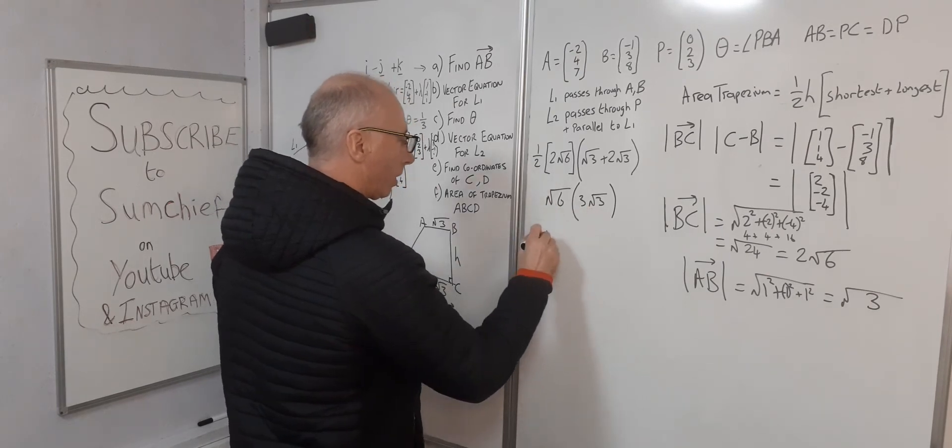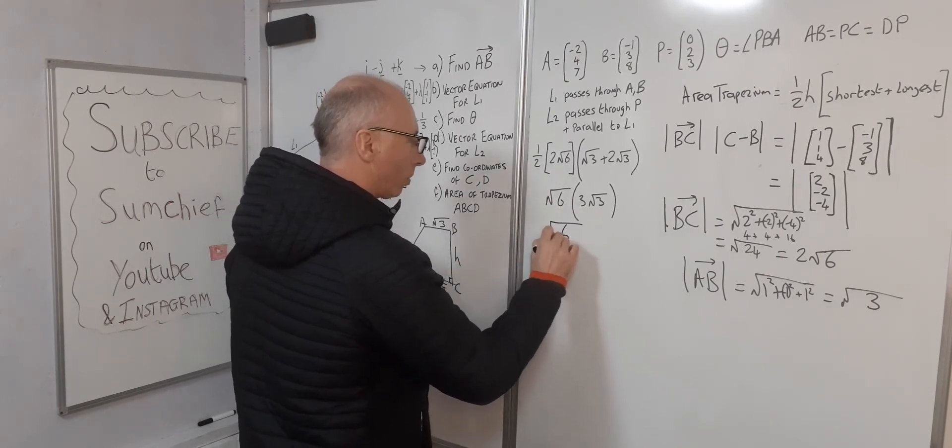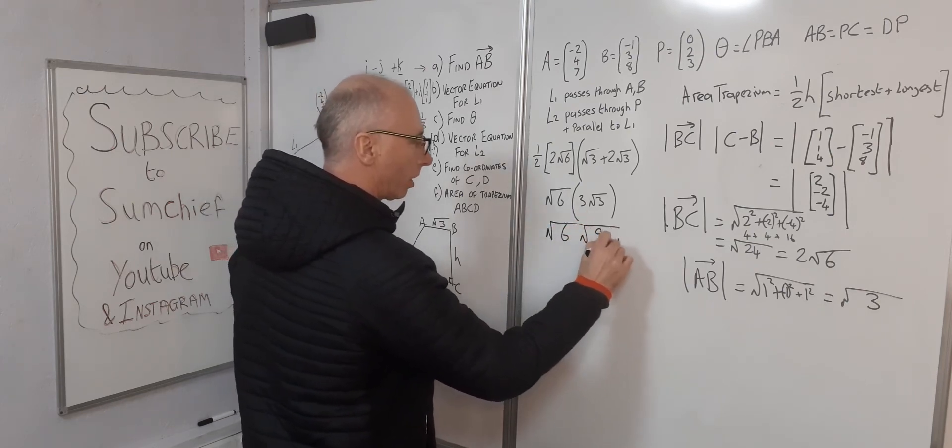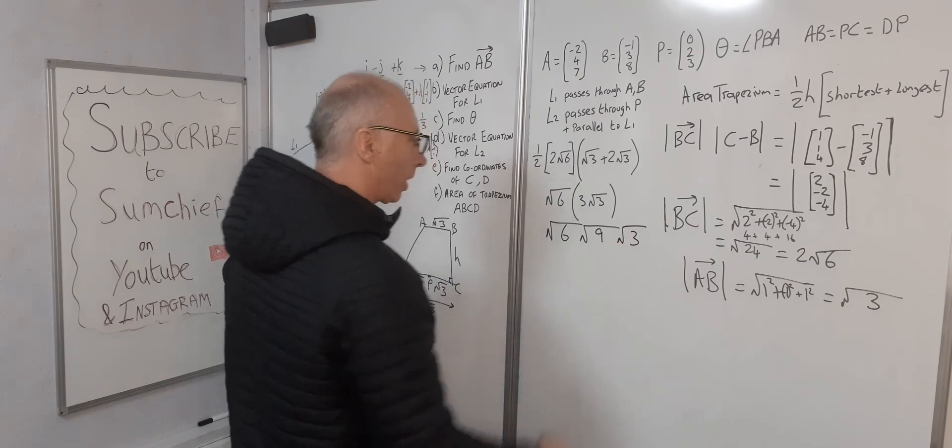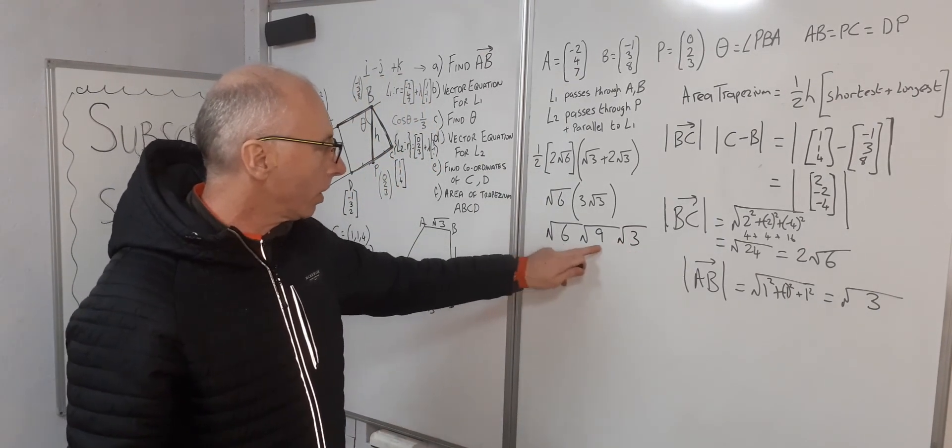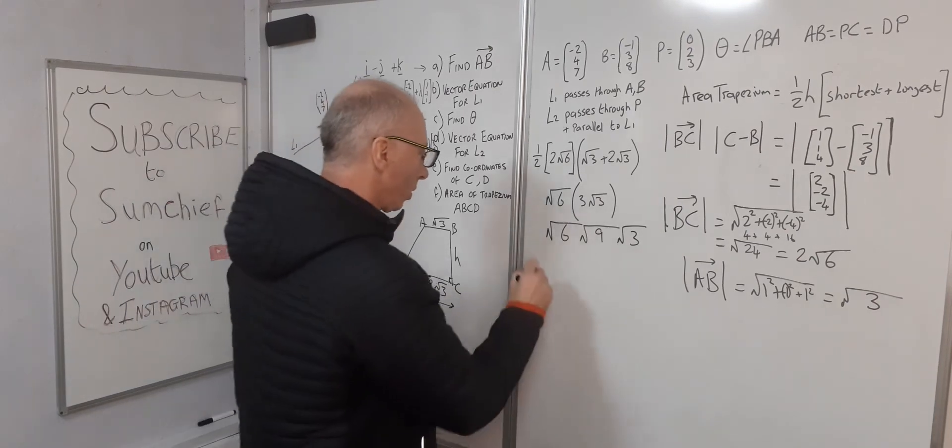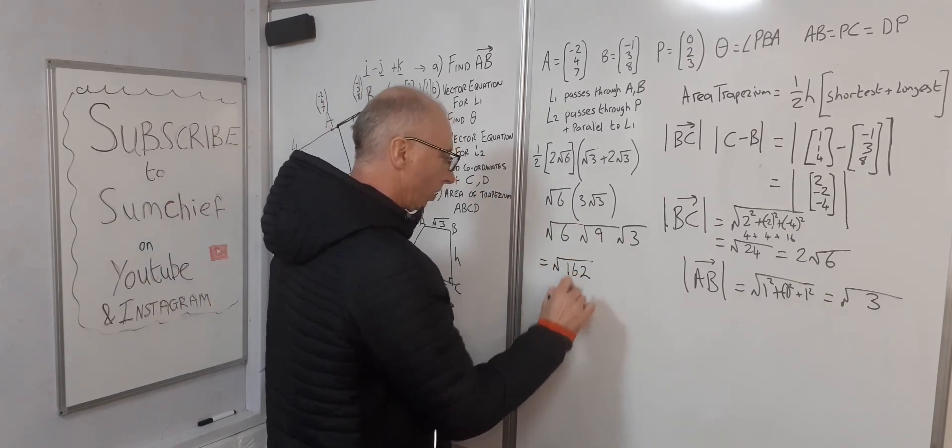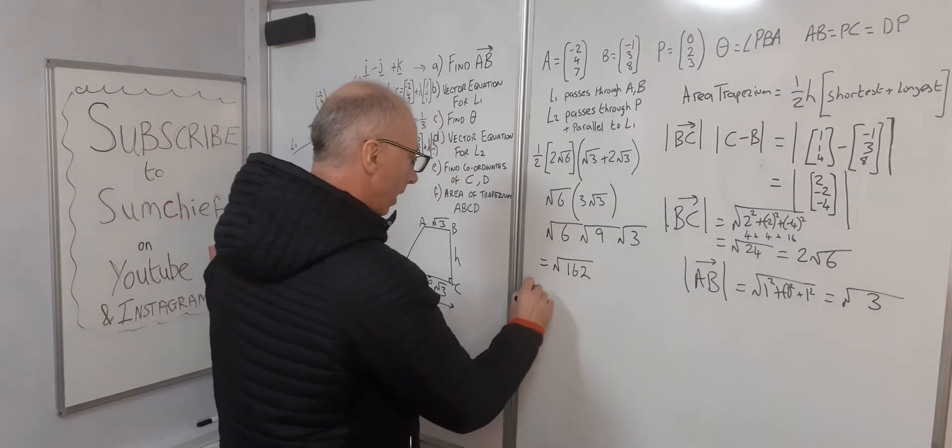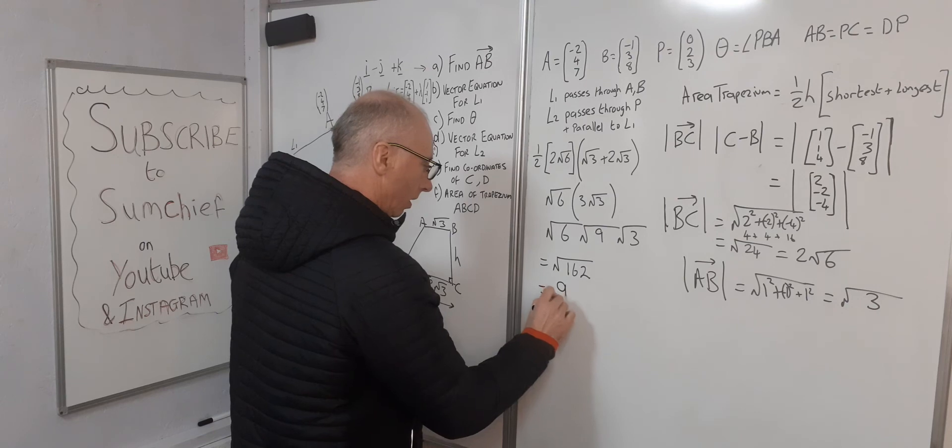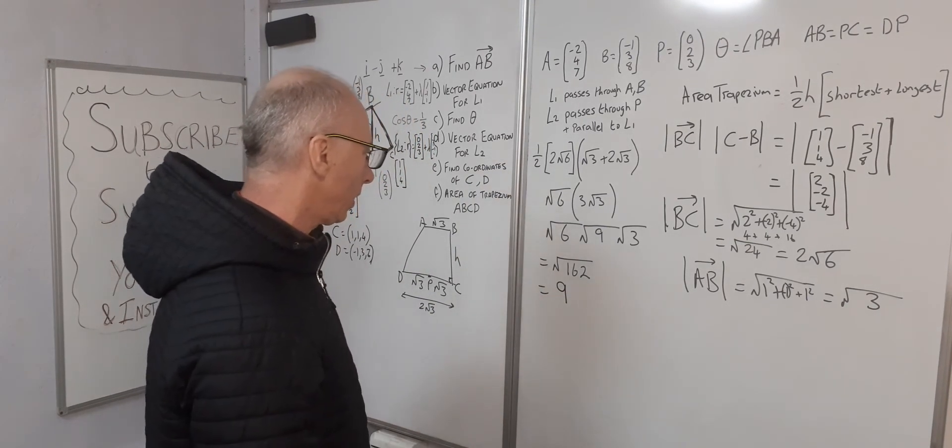So this will simplify out as √6 times 3√3. Multiply these all up together: √3 is √9, so 6 times 9 is 54, times 3 is 162. So we get √162. 162 divided by 9, so 9s into 162 go 18.